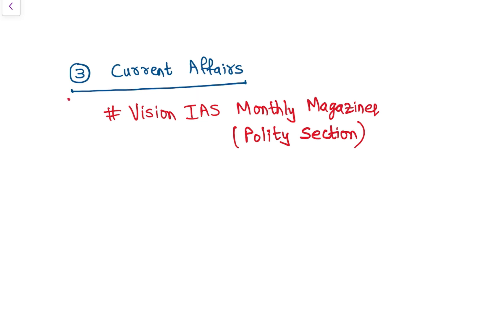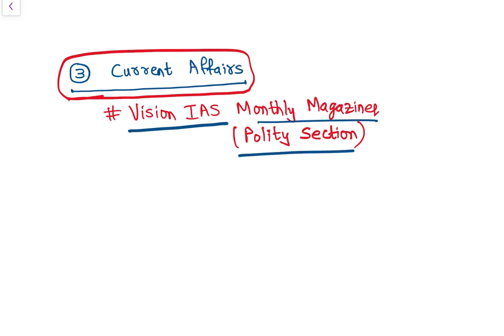Now, how to read current affairs. For current affairs I recommend reading Vision IAS monthly magazines, specifically the polity section. Vision IAS covers current affairs exhaustively, and of late we are seeing more questions from polity based on current affairs.